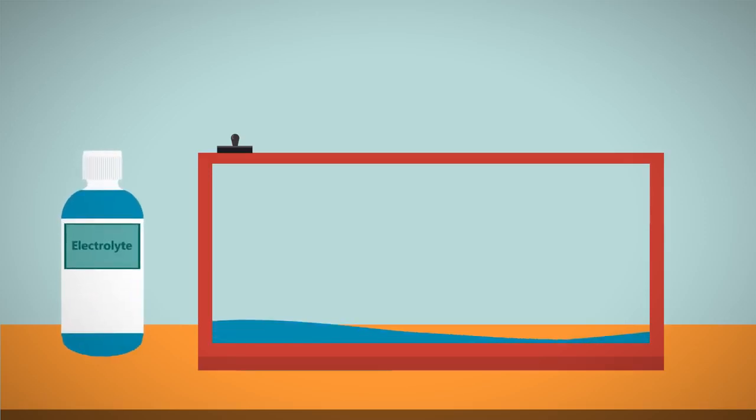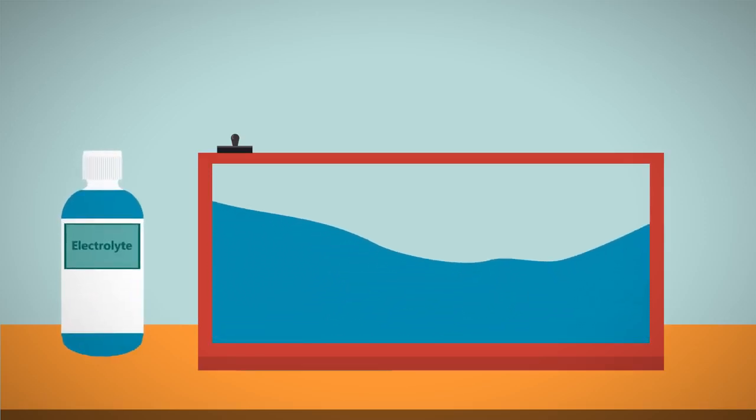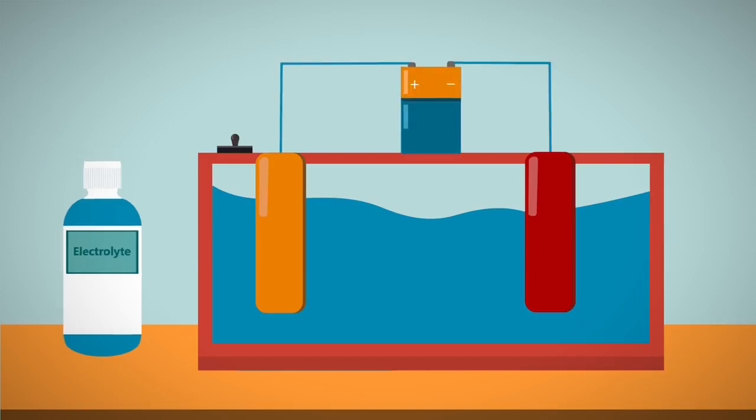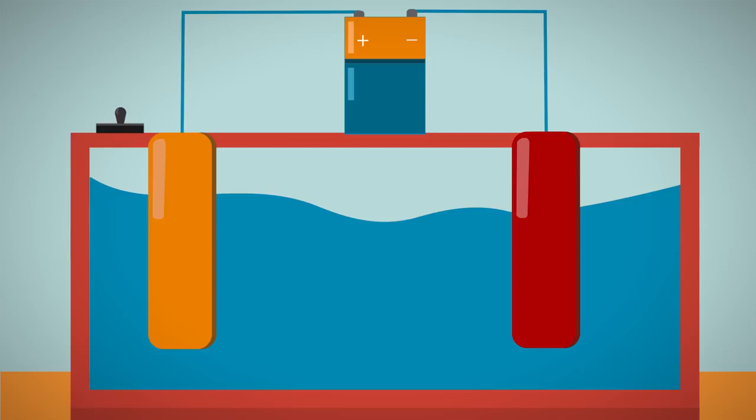So how does electroplating work? An electric current is passed through a solution that conducts electricity, called an electrolyte. To create this current, two electrodes are dipped into the electrolyte solution and connected to a battery or power supply. So we end up with a setup that looks something like this.